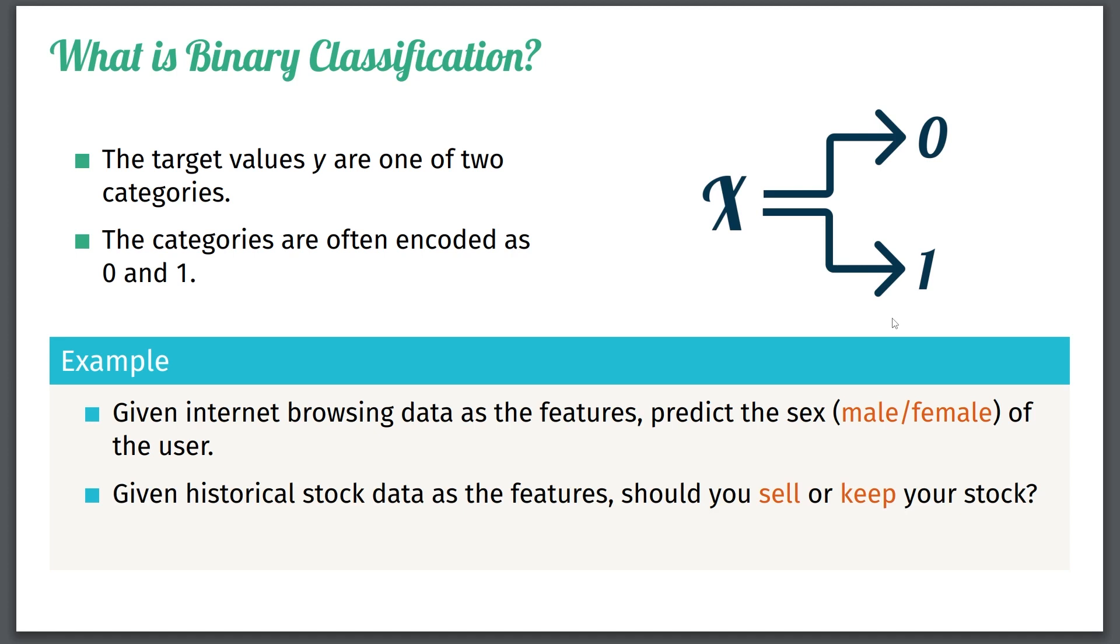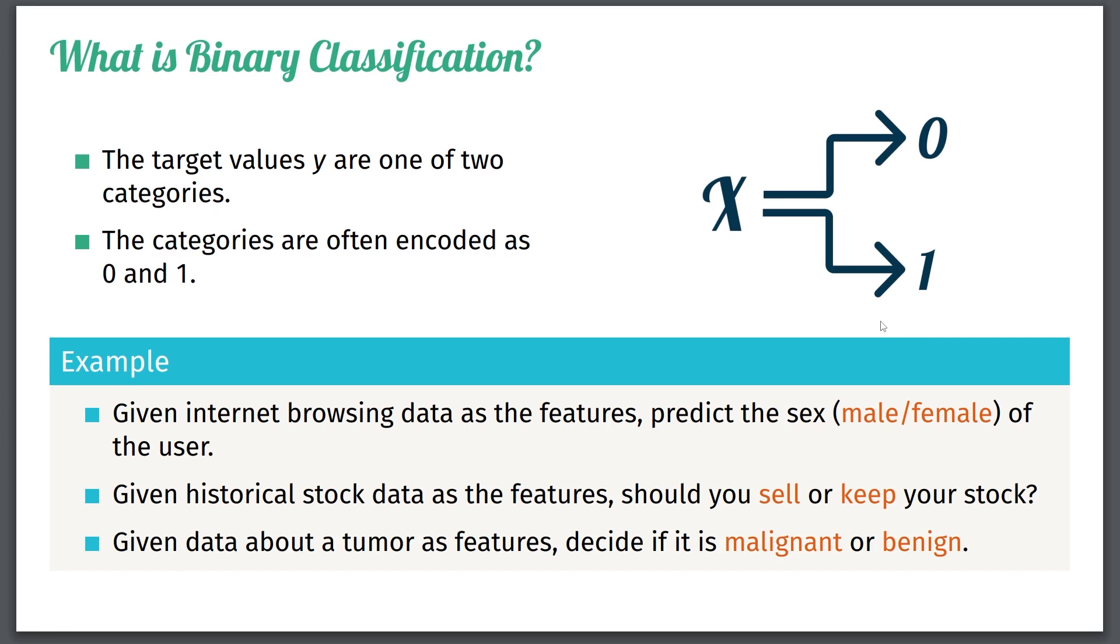So second example, given historical stock data as the features, you should either decide if you're going to sell or you're going to keep your stock. This is something that algorithms that deal with stock trading do multiple times a minute. And here again, you have two options, sell or keep. As a final example, given data about a tumor as a feature, decide if it's malignant or benign.